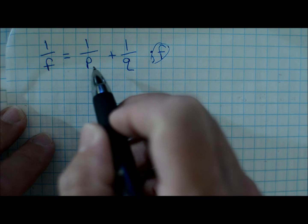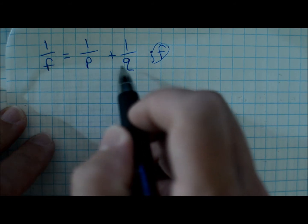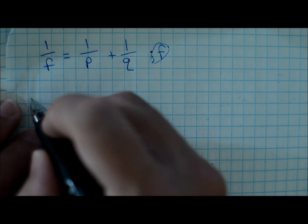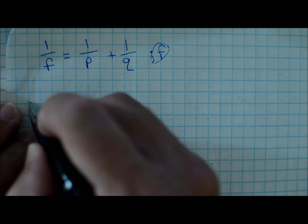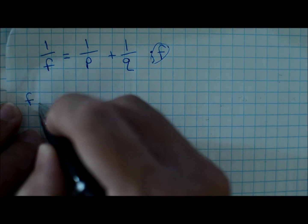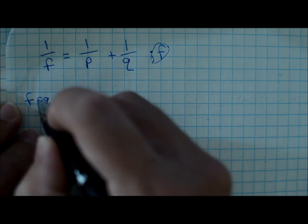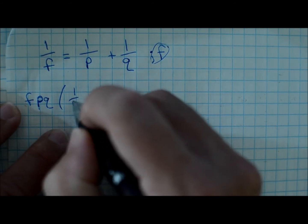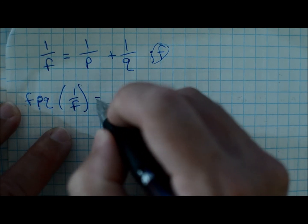to find a common denominator to combine all these. So if you multiply both sides by all of those denominators, you get FPQ times one over F is equal to